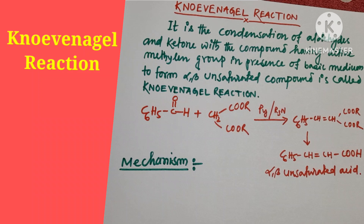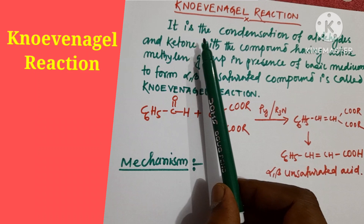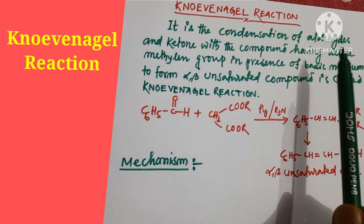Good morning dear viewers. Today I am going to discuss the Knoevenagel reaction, one of the famous reactions in organic chemistry name reactions. This is a very confusing area where Perkin reaction and Knoevenagel reaction are often mixed up, because both products are the same but the path of the reaction is different. We have to know the mechanism and the reaction. This is a condensation reaction in which the reacting species are aldehydes and ketones.